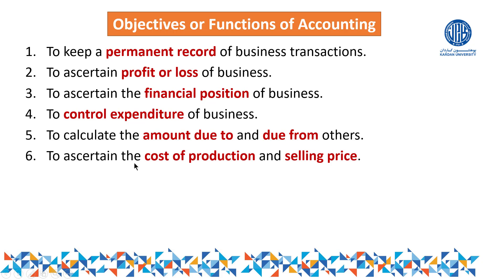Number six: to ascertain the cost of production as well as selling price. Through accounting, we can find out how much is the cost of a particular product and what the selling price should be. For example, in a manufacturing company producing a marker, if the cost per marker is $2, we add profit to determine the selling price. Even for a trading company, accounting tells us how much to sell in the market to cover costs and make profit.